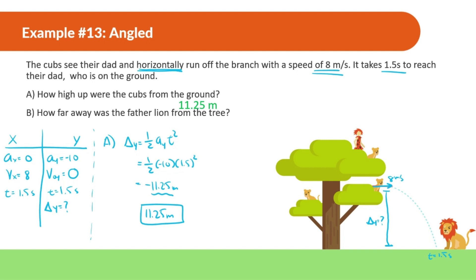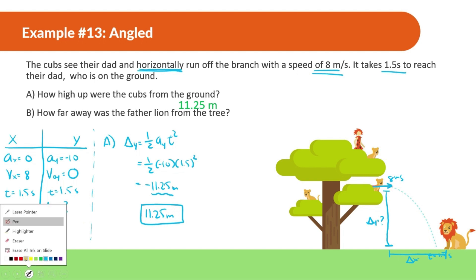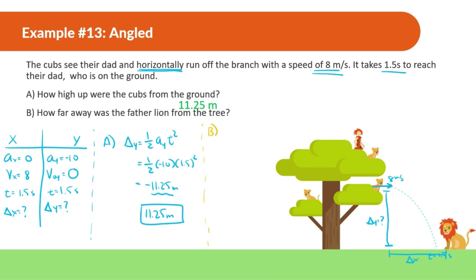Part B: how far away was the father lion from the tree? We're looking for displacement in x. For the x direction we only have one formula: VX equals displacement X divided by t, so displacement equals velocity x times time. Velocity in x is 8, time is 1.5, so displacement equals 8 times 1.5 — which gives 12 meters.